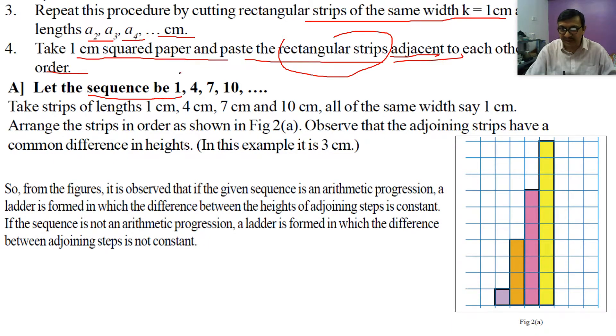Let me give you an example. Let the sequence be 1, 4, 7, 10. The strips have lengths: first 1 centimeter, 4 centimeter length, and in this graph, this square paper, see this is 1 centimeter, and this is 4 centimeters: 1, 2, 3, and 4.